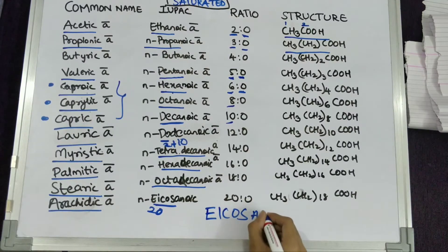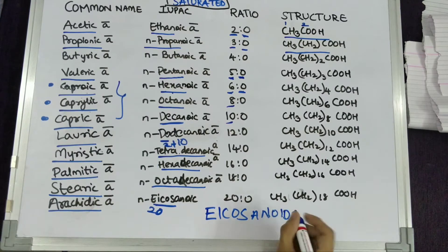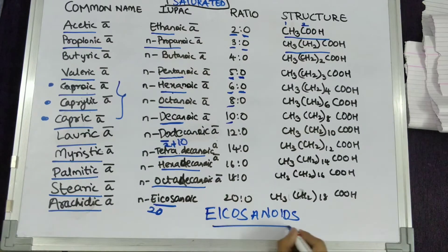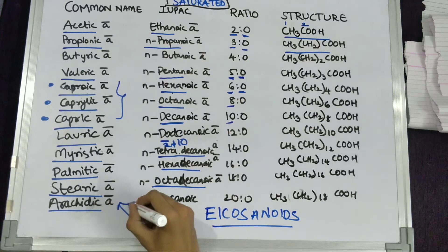Arachidic acid is important as it is the precursor for eicosanoid molecules, which are synthesized within the body. Some of these include inflammatory mediators.